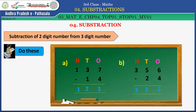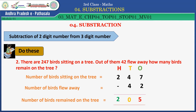Do this. There are 247 birds sitting on a tree. Out of them, 42 flew away. How many birds remain on the tree? Solution: number of birds sitting on the tree — 247. Number of birds that flew away — 42. Minus operation. Ones place: 7 minus 2 equals 5. Tens place: 4 minus 4, answer is 0. Hundreds place: 2 only, write 2. Number of birds remaining on the tree — answer is 205.